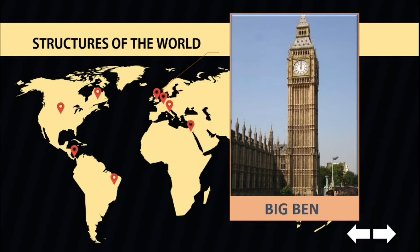Though Charles Barry designed Westminster's Palace, it was actually Augustus Pugin who created the clock tower, while the clock was designed by Beckett Denison.